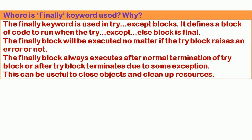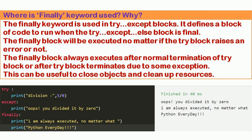Where is the finally keyword used, and why? The finally keyword is used in try/except blocks. It defines a block of code to run when the try, except, and else block is final. The finally block will be executed no matter if the try block raises an error or not. It always executes after normal termination of the try block, or after the try block terminates due to some exception. This can be useful to close objects and clean up resources.